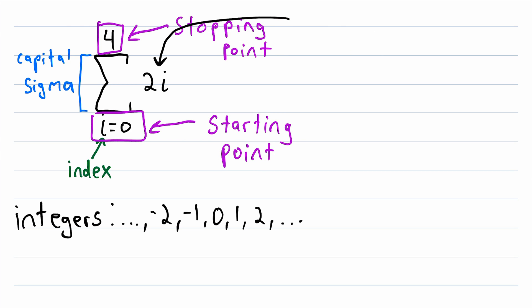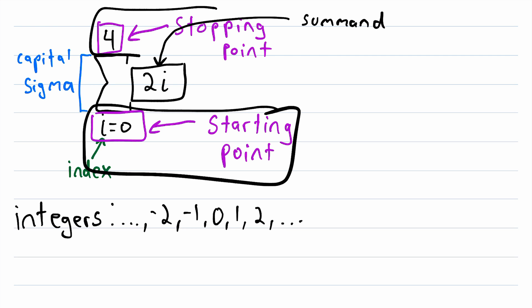This expression here, the 2i, is the thing that we'll be adding, so we call it the summand. So, all this summation notation tells us to do is to add this expression here to itself over and over again for every possible value of i. And this starting point and this stopping point tells us what those values of i should be.